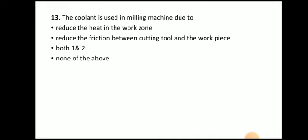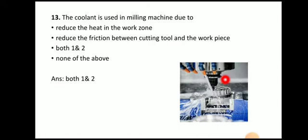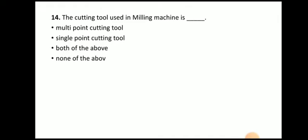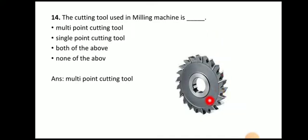Next question: coolant is used in milling machine — to reduce the heat in the work zone, to reduce the friction between the cutting tool and workpiece, both, or none of the above. The answer is both. Here you can see the coolant injected at the point of contact. Next: the cutting tool used in milling machine is — multi-point cutting tool, single point, or both. The answer is multi-point cutting tool, as the milling cutter has multiple cutting teeth.